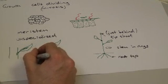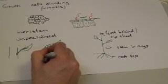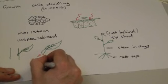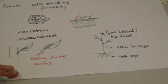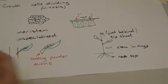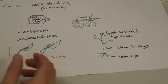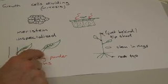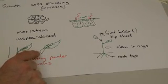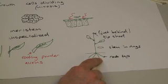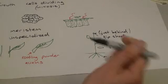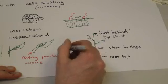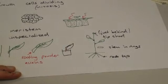I would dip the end of where I've cut off my cutting in rooting powder. Rooting powder contains chemicals called auxins which are a type of chemical in plants that can encourage growth. In fact what this will do is it will encourage some of these meristem cells in here to turn into roots.